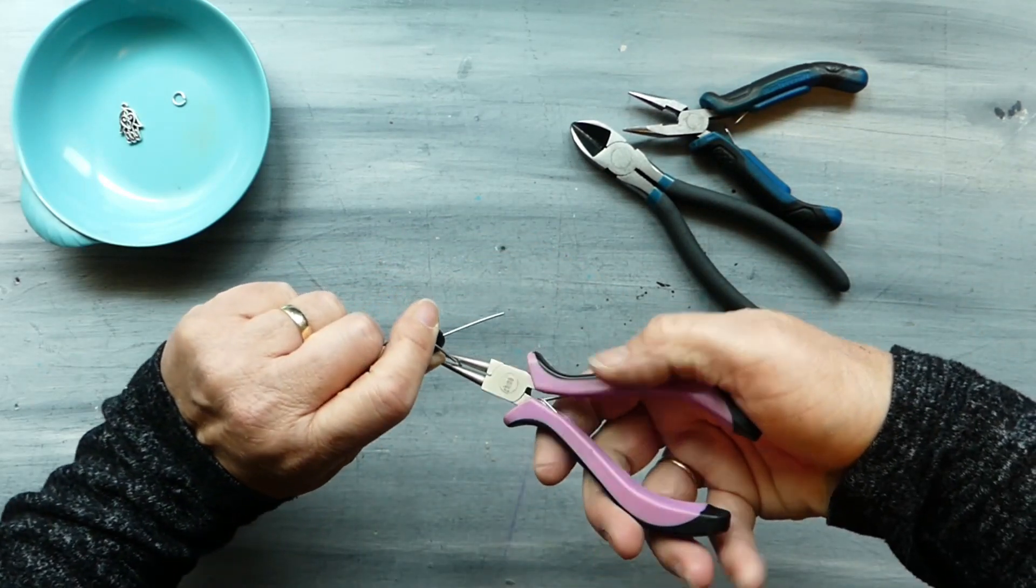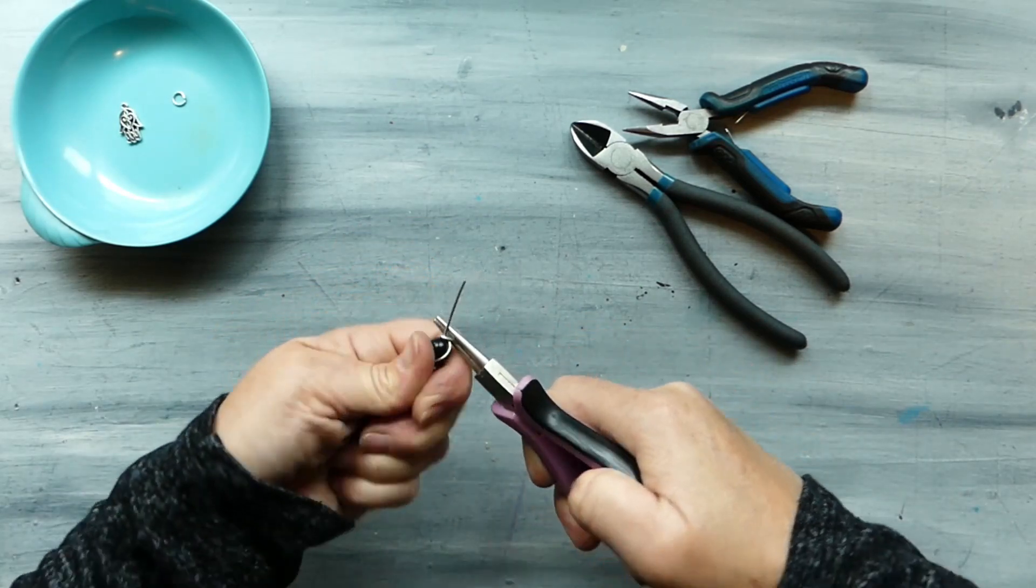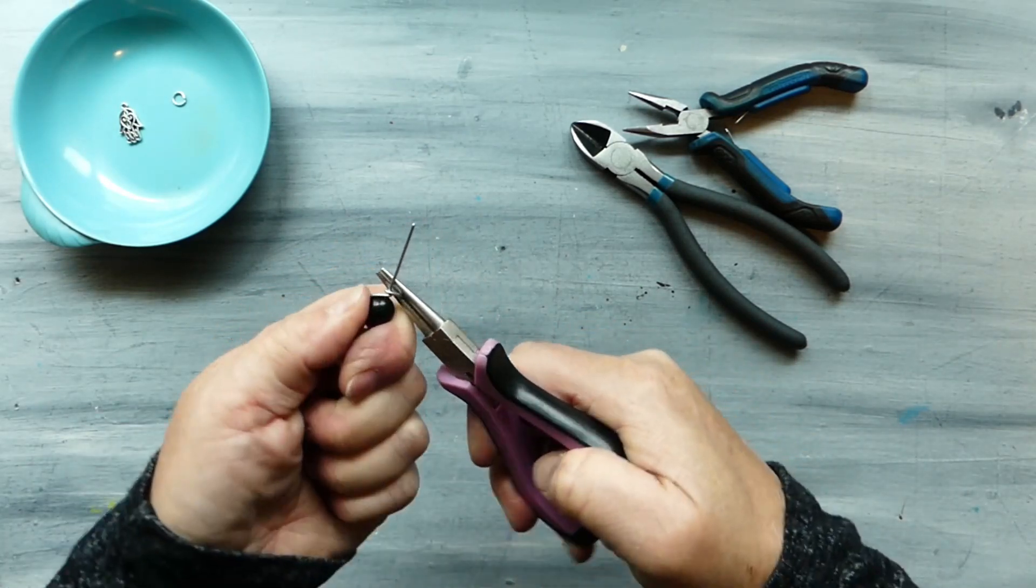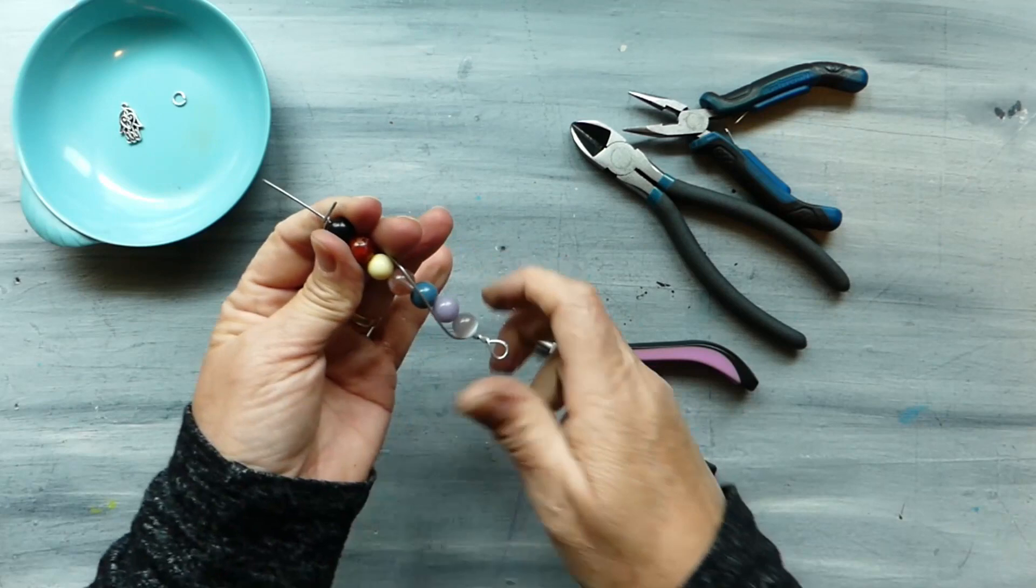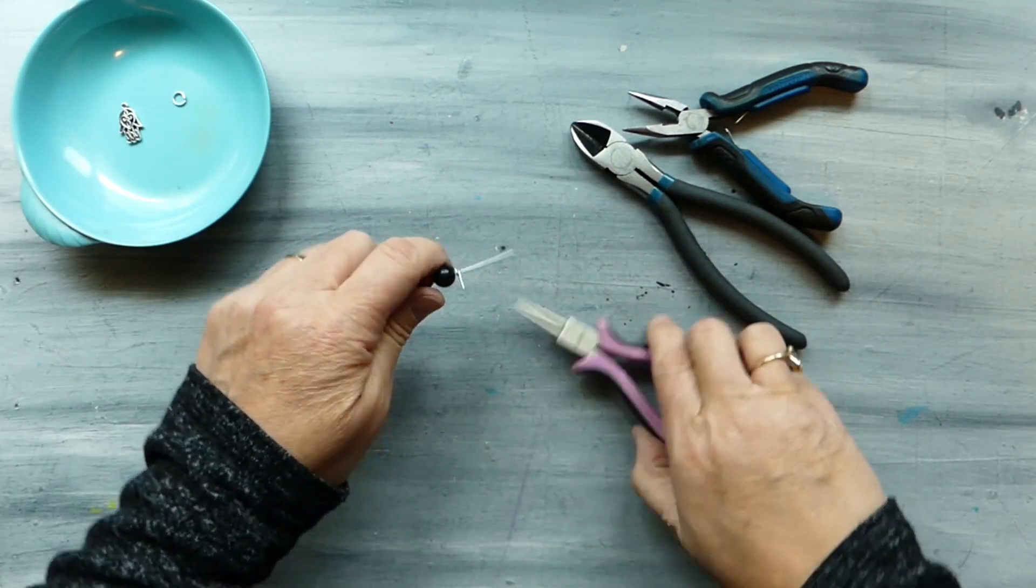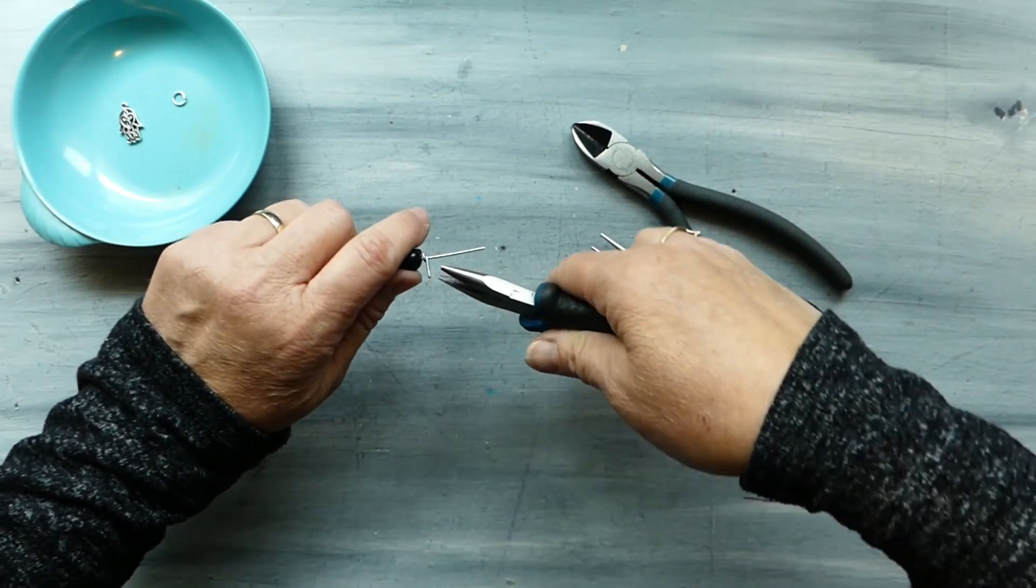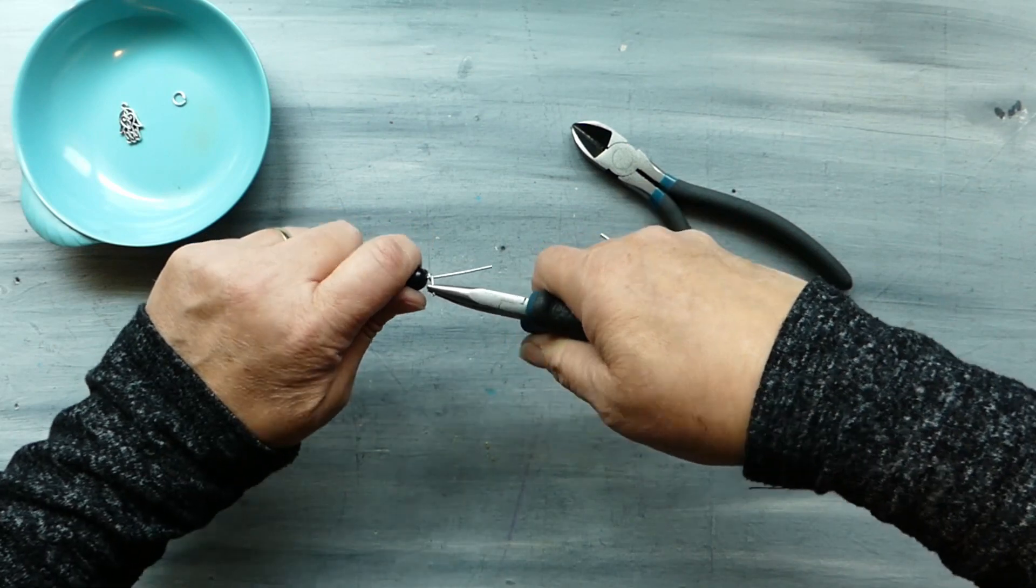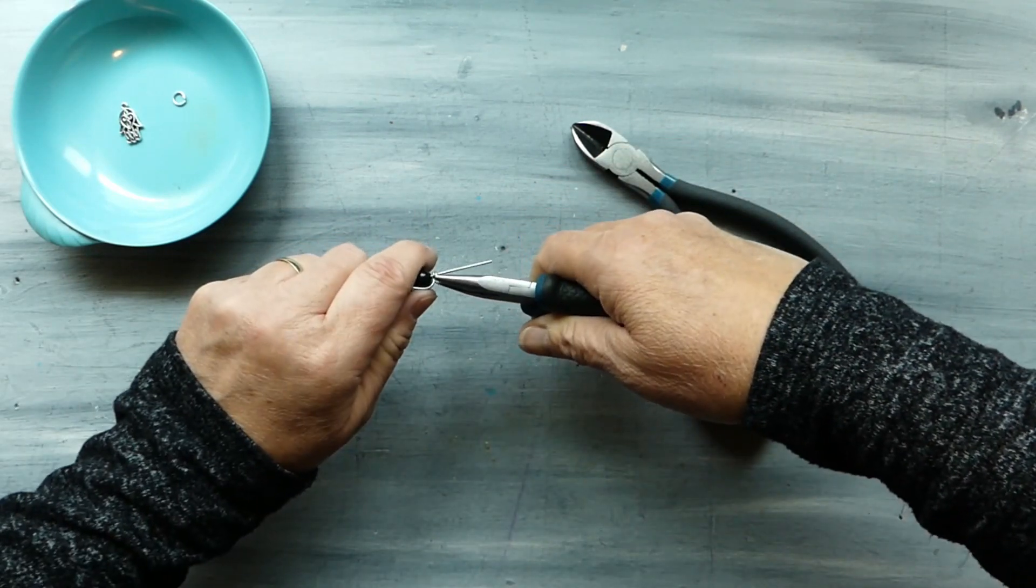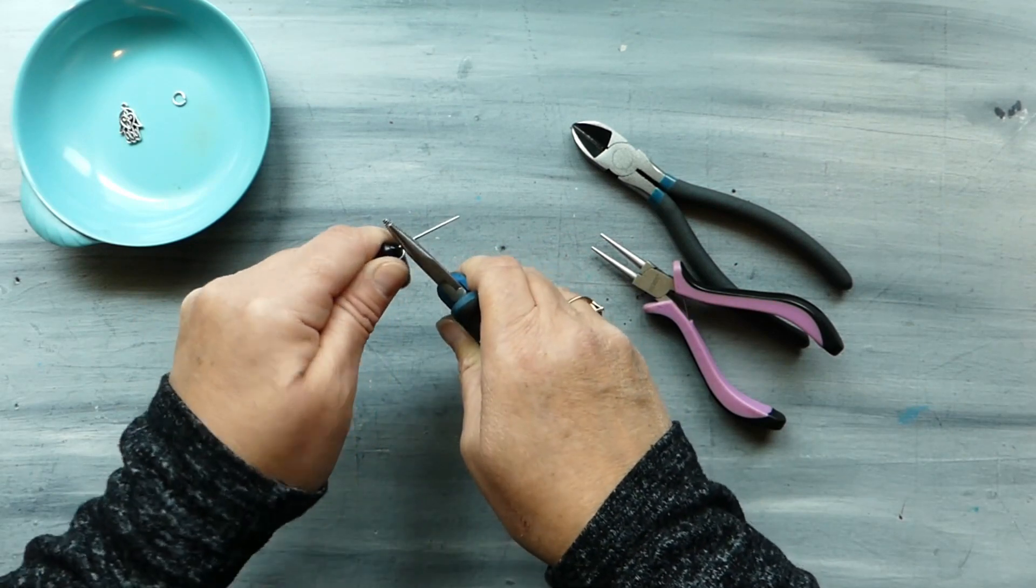Now holding onto this firmly we're going to take our pliers and we are going to just wrap that wire a couple of times straightening out our beads. Ideally we want this straight so I'm going to use these ones because they got teeth on them, a little bit stronger, something to grab onto, taking that wire and just twisting it all the way around.